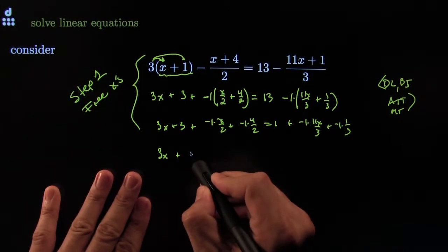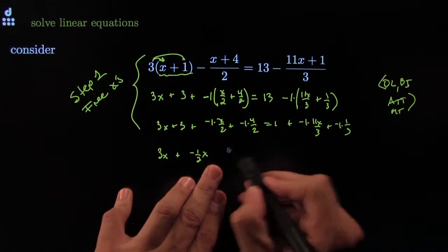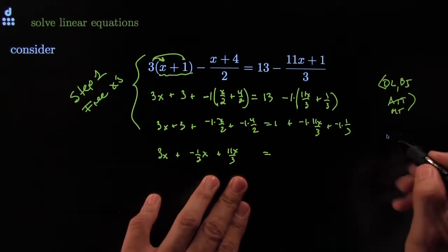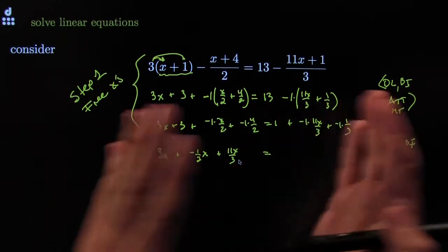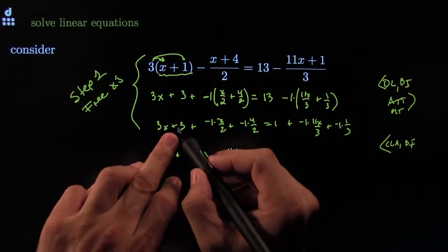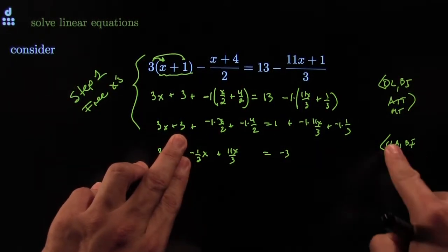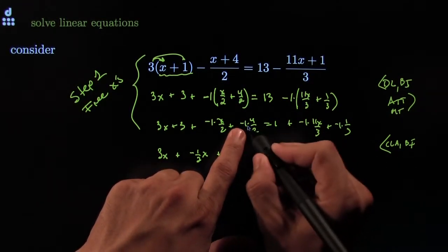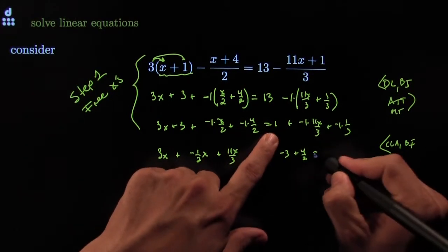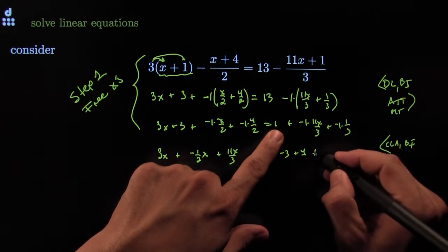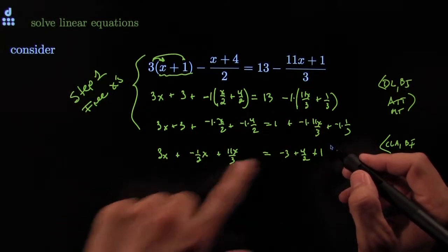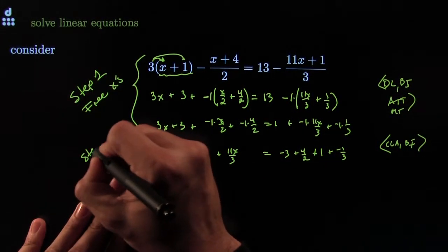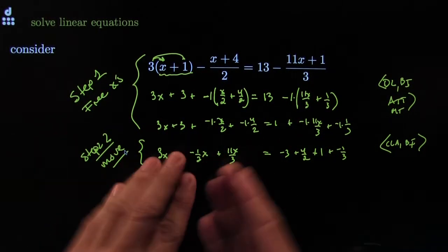Now I can move them around. If it has an X it will stay on this side: negative one-half X stays, and negative 11X over 3 moves over as positive 11X over 3. This is by the cancellation law of addition — adding things to both sides to get all X's on one side. Things with no X go to the other side: negative 3 moves over, negative 4 over 2 becomes positive 4 over 2 on that side, 13 stays, and negative 1 over 3 stays. This is step two.